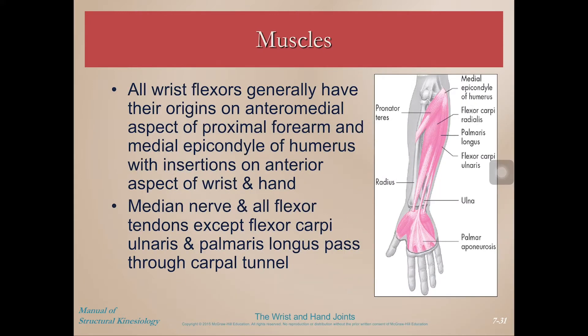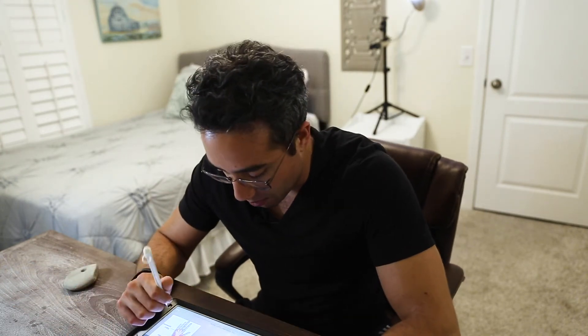Generally, all the wrist flexors have their origins on the anteromedial aspect of the proximal forearm and the medial epicondyle of the humerus — right in this zone. We have that flexor wad you can see in the picture, and also on yourself coming down on the anterior aspect and crossing the wrist on that anterior aspect.